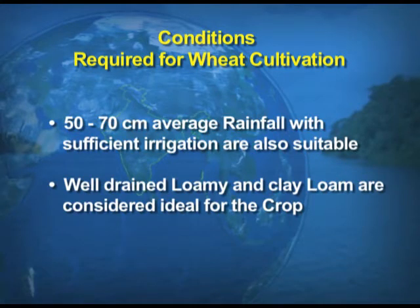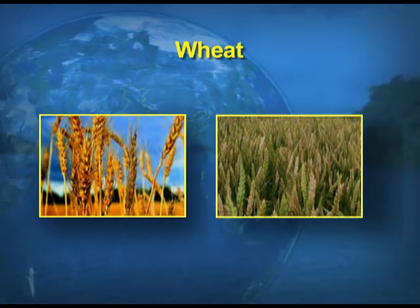As far as soil is concerned, well-drained loamy and clay loam soils are ideal for wheat. Well-drained means stagnant water is not required. Cultivation of wheat is highly mechanized, unlike rice which is labor intensive. So not much labor is required for wheat production. You can see a visual of fully ripened wheat in the field.